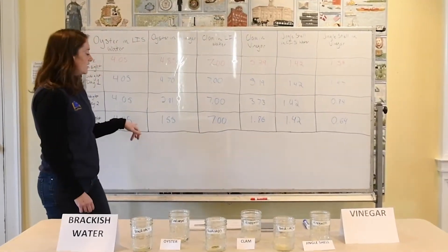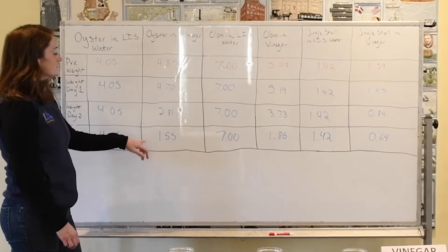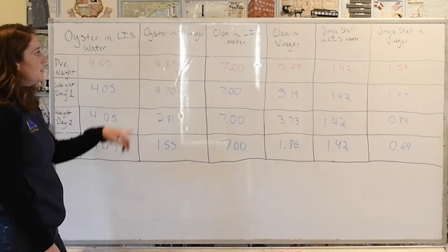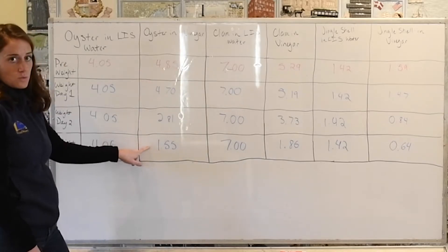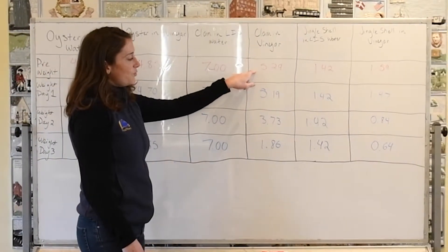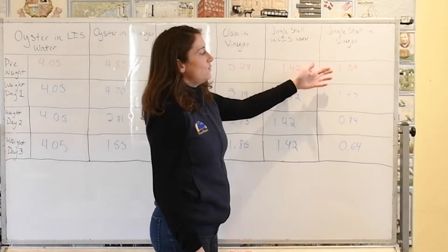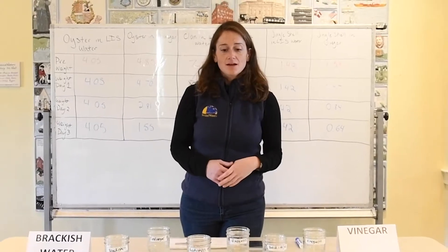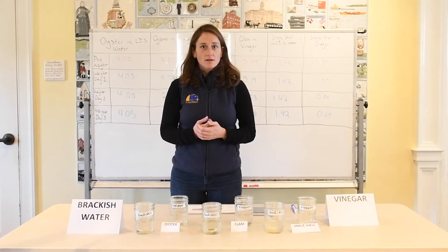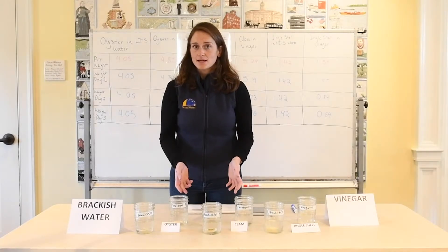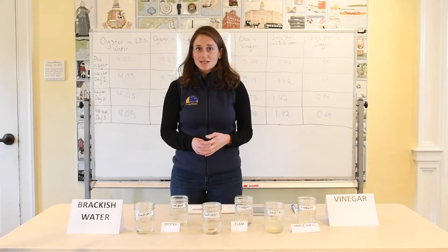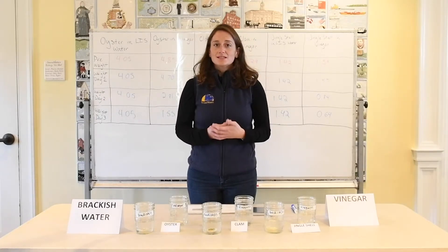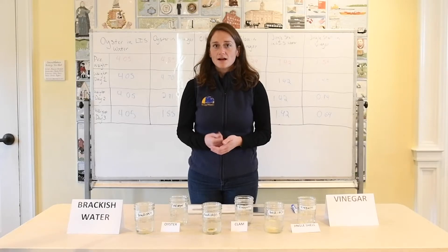Looking at the numbers from day three, we can see that any of the shells that were in water had no change at all — they were the same weight as they started. But the oyster in vinegar went from 4.85 grams down to 1.55. The clam went from 5.29 to 1.86. And the jingle shell went from 1.59 to 0.64 — substantial decreases due to the acidity of the vinegar eating away at the shell. Now, the ocean is not going to get as acidic as vinegar, which is a very strong acid, but the acidification of the ocean will still have a great effect on the strength of these shells.